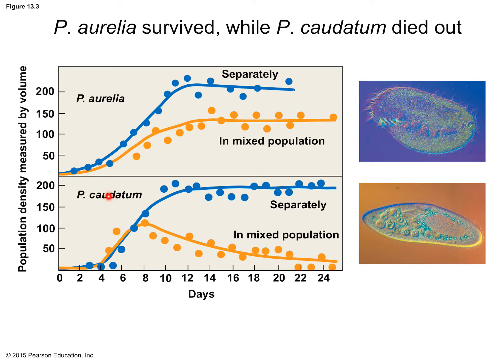When P. caudatum was grown in isolation, it did well also — it reached its carrying capacity and stayed there. But when grown in mixed culture with P. aurelia, it initially ticked up, but once competition increased, it really started to lose out to P. aurelia. And eventually, over an extended period of time not shown in the graph, P. caudatum went to extinction. It was out-competed by P. aurelia.